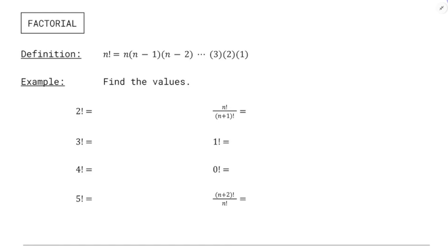It's definitely got a combinatorial meaning behind it, and I'll talk about that in a second. But first, as far as finding the values like 2, 3, 4, and 5 factorial — those are pretty common. 2 factorial is 2 times 1, and that's just 2. 3 factorial is 3 times 2 times 1, and that's 6. 4 factorial is 4 times 3 times 2 times 1 — that's 4 times the previous result, 6 times 4, which is 24. And 5 factorial is 5 times 4 times 3 times 2 times 1, which gives me 120.